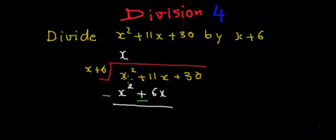And now we have to perform the addition. So this x squared and this x squared will get cancelled, will result in 0. And 11x minus 6x will be 11 minus 6, that is 5x.